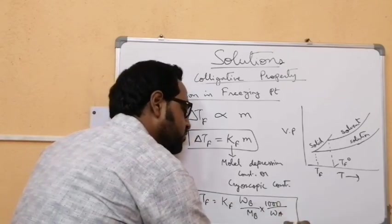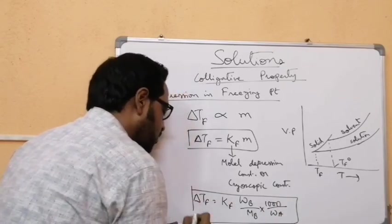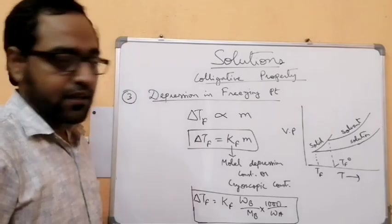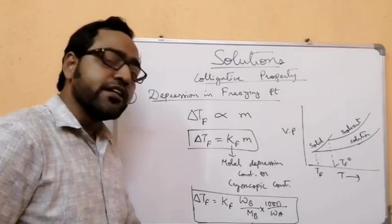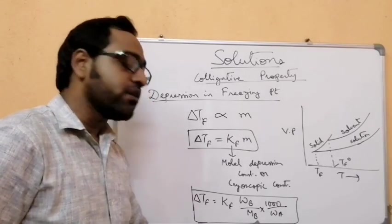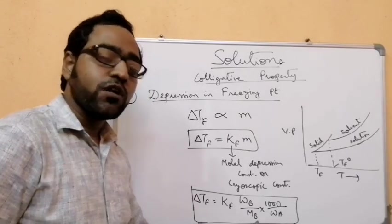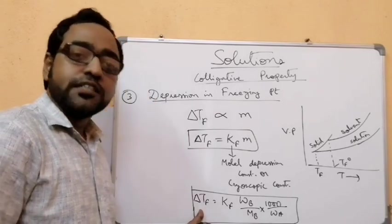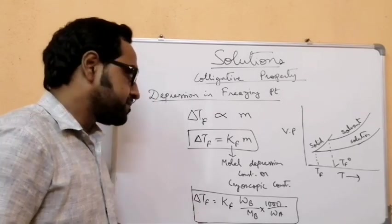We can write ΔTF = KF × (W_B / M_B) × (1000 / W_A). You have to memorize this equation for solving numericals, where you will be asked to find either the molecular weight or the depression in freezing point.